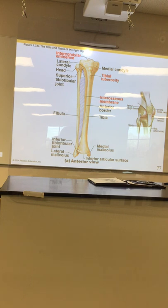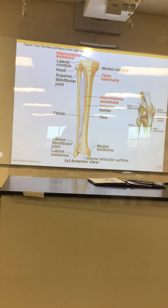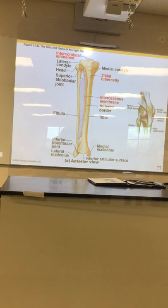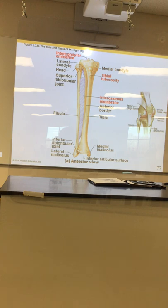The interosseous membrane in the arm and the leg are similar, but different. In the leg, the fibers are super tight — your leg doesn't twist. If I wrench Keontae's leg, most of the movement will be in the hips, not the lower leg. In the arm, you have a pivot joint — it's very flexible. The fibers in that interosseous membrane in the arm are looser than the ones in the leg.